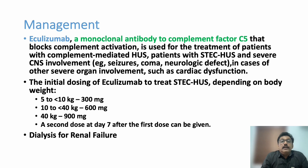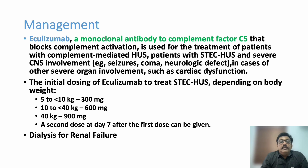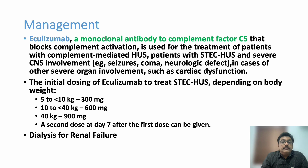Eculizumab is a monoclonal antibody against complement factor C5 that blocks complement activation, used for complement-mediated HUS. It is also used for Shiga toxin HUS with severe CNS involvement. Dosing is weight-based: 5–10 kg: 300 mg; 10–40 kg: 600 mg; 40–90 kg: 900 mg, with a second dose at day 7. Dialysis should be recommended for patients with renal failure.